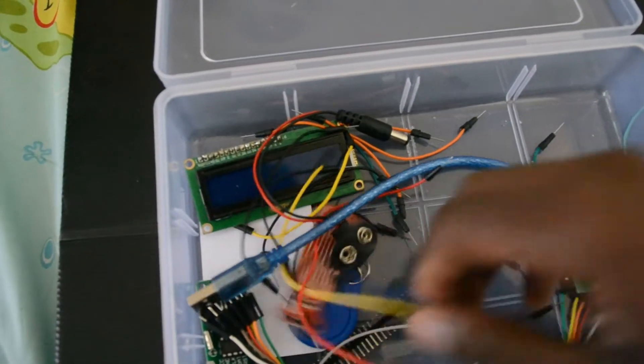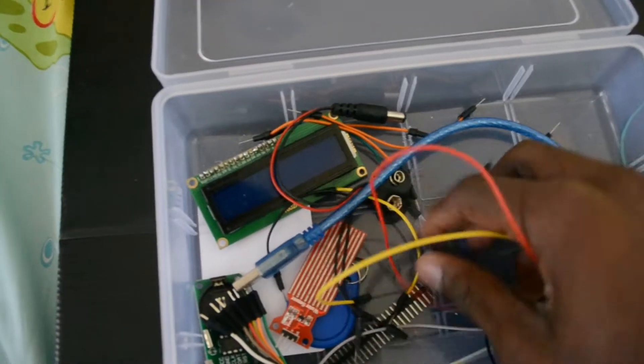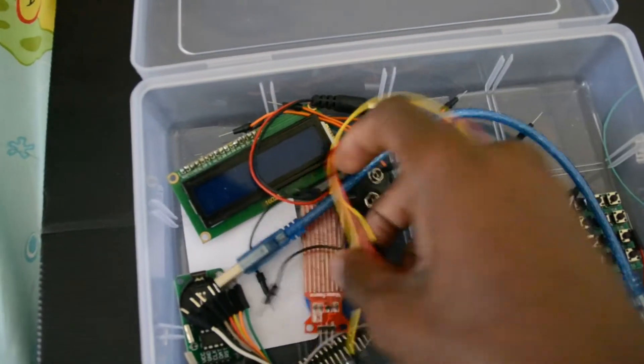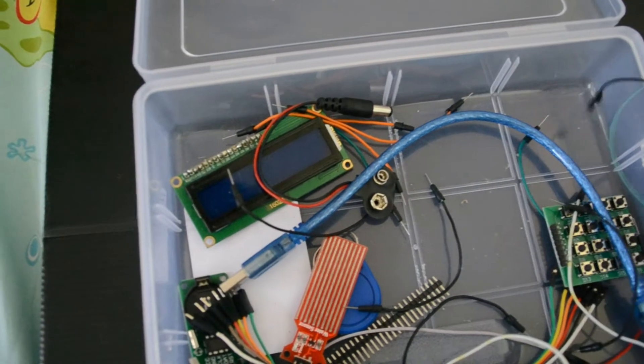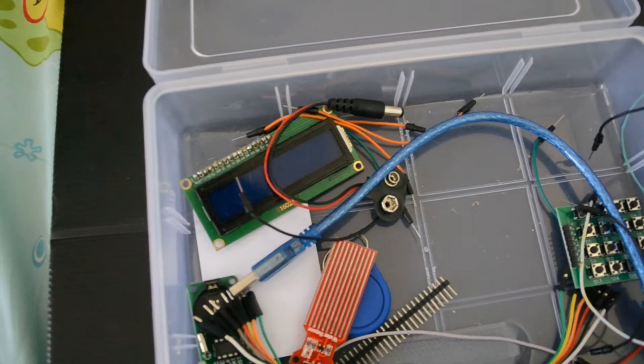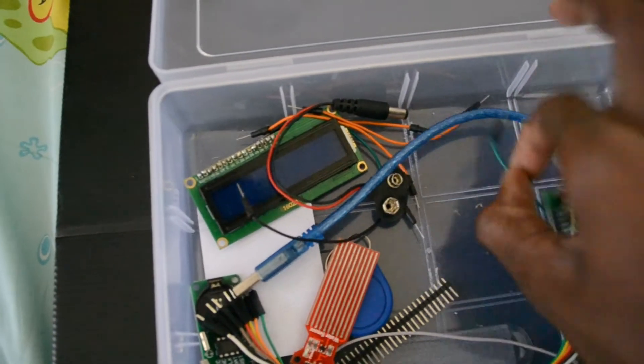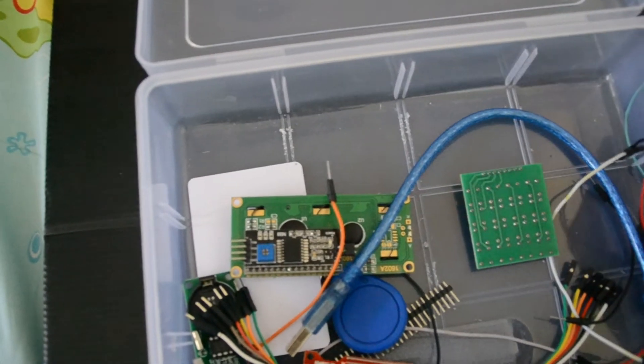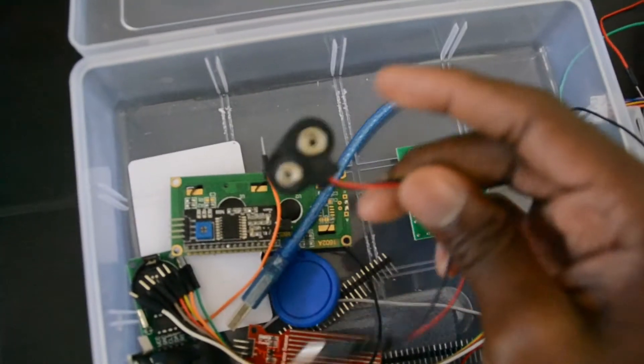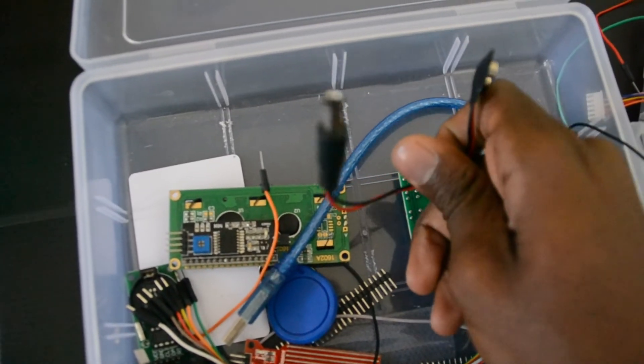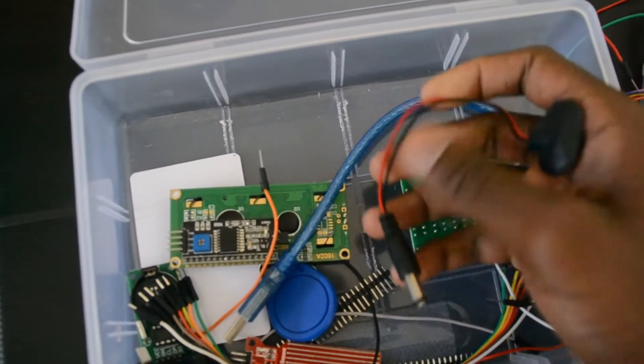It comes with these female to female jumpers, pretty basic jumpers, a lot of them, like I think it's 50 or 20, I don't know, but it has a lot of them. I have this 9 volt battery to this power jack to power your Arduino.